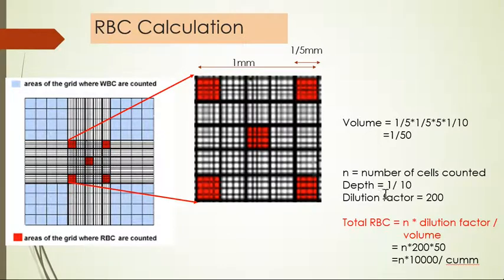Depth is 1/10 and dilution factor is 200. Total RBC count is n x dilution factor divided by volume. So n x 200 divided by 1/50 equals n x 10,000 per cubic mm.